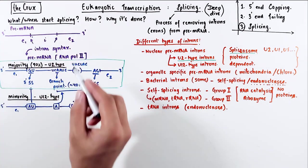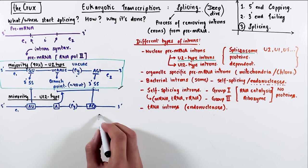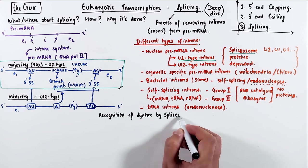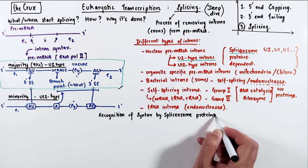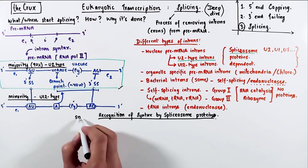Now, getting back on track when we ask what and when starts this splicing process, and specifically asking this question in context of U2-type introns, the answer is that when the intron syntax is recognized by the spliceosome proteins, the splicing starts.